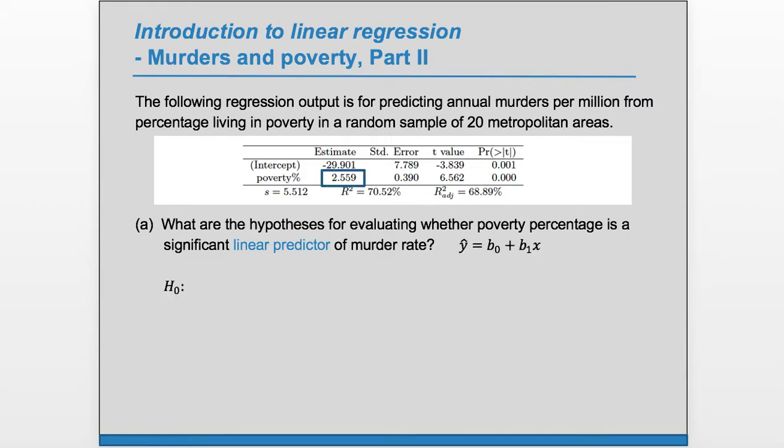When thinking about what our null hypothesis should be, consider that our linear model is y hat equals b0 plus b1x. If this b1 term were zero, the term would disappear, and we would see that x is not helpful at all in estimating y.